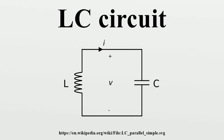The circuit can act as an electrical resonator, an electrical analog of a tuning fork, storing energy oscillating at the circuit's resonant frequency. LC circuits are used either for generating signals at a particular frequency, or picking out a signal at a particular frequency from a more complex signal. They are key components in many electronic devices, particularly radio equipment, used in circuits such as oscillators, filters, tuners and frequency mixers.